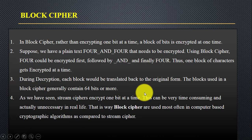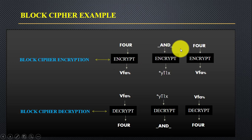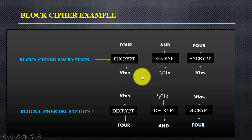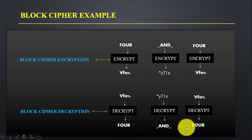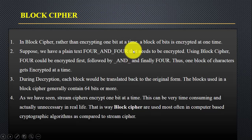Now let's look at block cipher. Block cipher divides the plain text into blocks and then encrypts one block at a time. Suppose we have a plain text of size 4 and 4. We divide it into blocks — you can see the two blocks of 4 and 4. It encrypts one block at a time, producing a cipher text for each block. After decryption you get the original data back. You can see the difference: in block cipher the whole block is encrypted at a time, whereas in stream cipher encryption is done bit by bit.